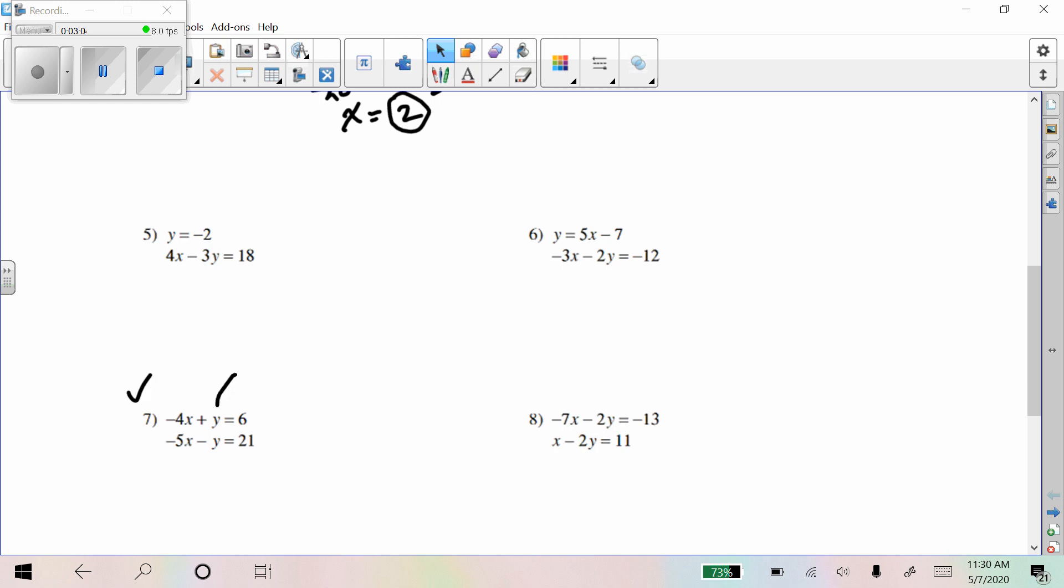So let's look at number 7 here. I'm going to choose to figure out what y equals in terms of x right there. Because y is all by itself and it's positive. So I'm just going to rearrange this equation by adding 4x to both sides. So I get y equals 6 plus 4x.